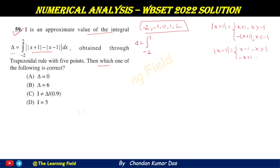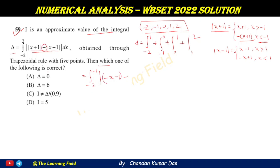We break the integral into subintervals: −2 to −1, −1 to 0, 0 to 1, and 1 to 2. On the interval −2 to −1, since x < −1, |x + 1| = −x − 1, and |x − 1| = 1 − x. So the first integral becomes ∫₋₂⁻¹ (−x − 1)(1 − x) dx. On −1 to 0, since x > −1, |x + 1| = x + 1, and |x − 1| = 1 − x.